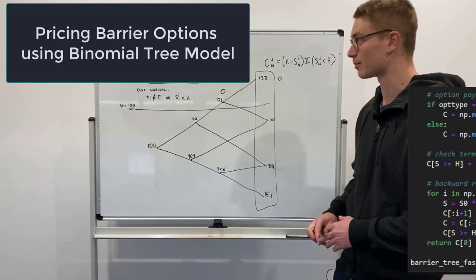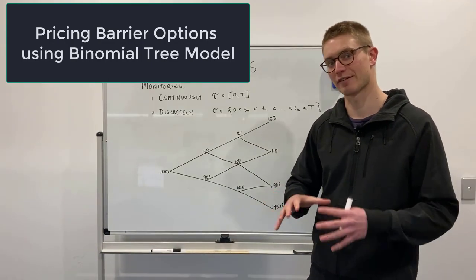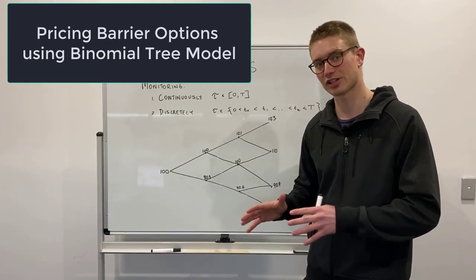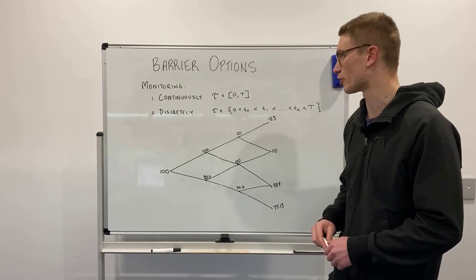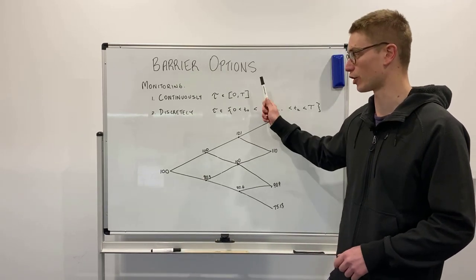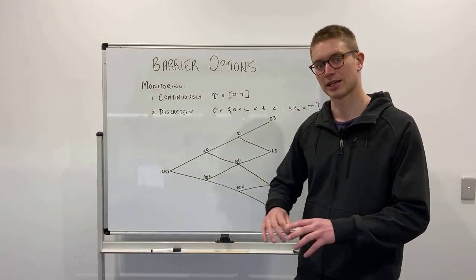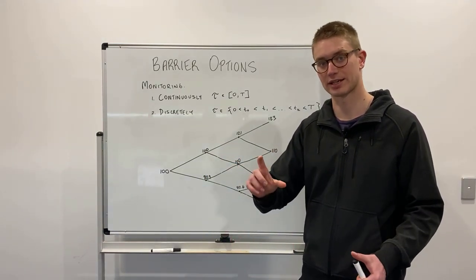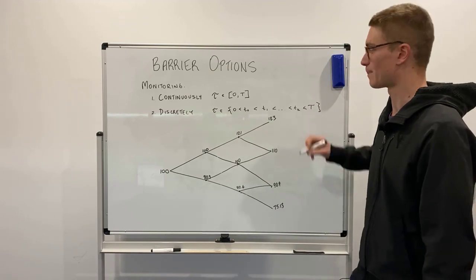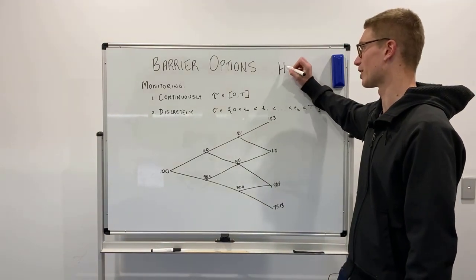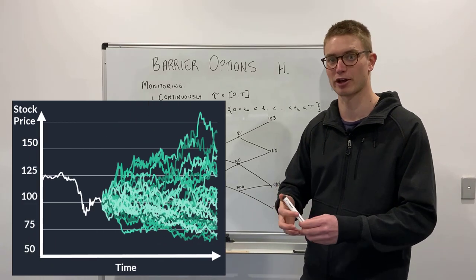Barrier options are very different to European options — they're actually path dependent. So we're concerned about where the underlying goes over its lifetime with respect to a relative value, and that value is the barrier value, which we're going to denote as H. There are two types of barrier options.